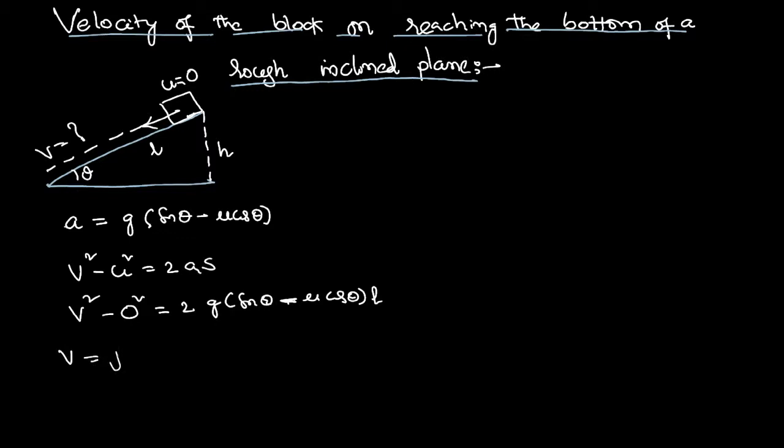Therefore, we can say the velocity of the block by the time it has reached the bottom is the square root of 2gL of sin theta minus mu cos theta. This is the formula for the velocity acquired by the body by the time it has reached the bottom of the inclined plane, covering the entire length.